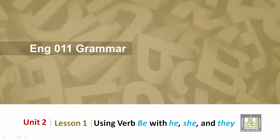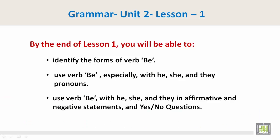English 011 Grammar, Unit 2, Lesson 1: Using the verb BE with he, she, and they. By the end of Lesson 1, you will be able to identify the forms of the verb BE, use the verb BE especially with he, she, and they pronouns, and use the verb BE with he, she, and they in affirmative and negative statements, as well as yes or no questions.